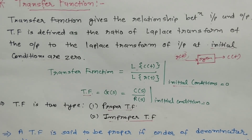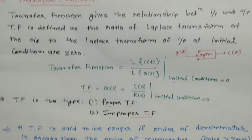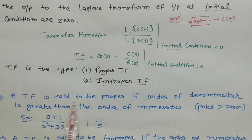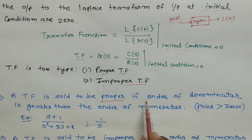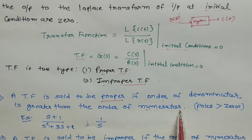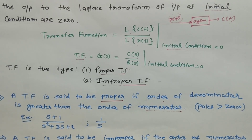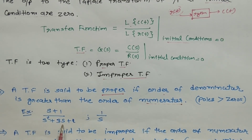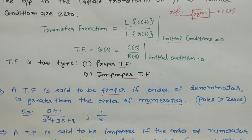The definition of a proper transfer function: a transfer function is said to be proper if the order of the denominator is greater than the order of the numerator. For example, the transfer function (s + 1) / (s² + 3s + 2) — in the denominator the order of s is 2.